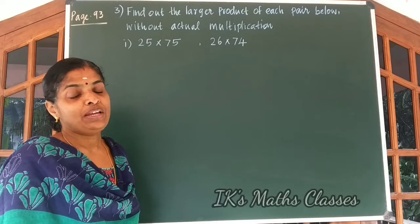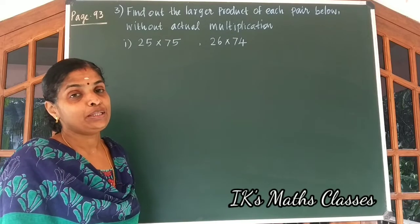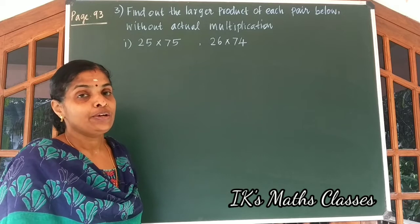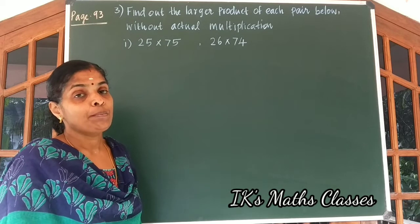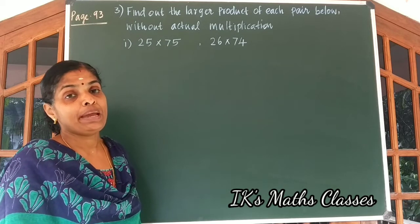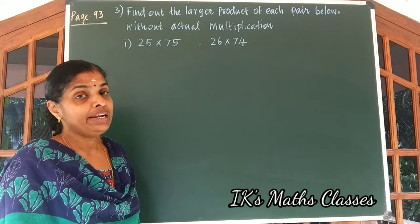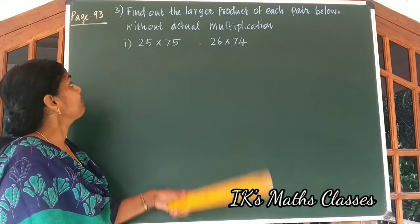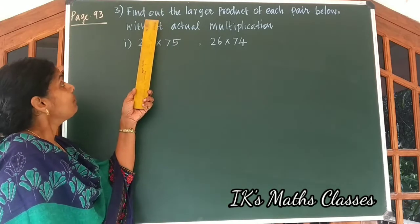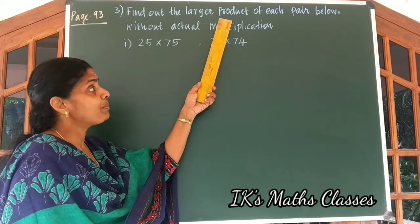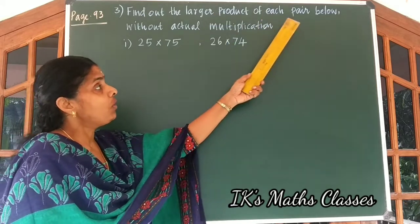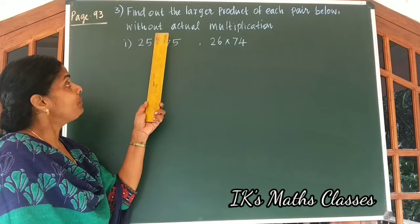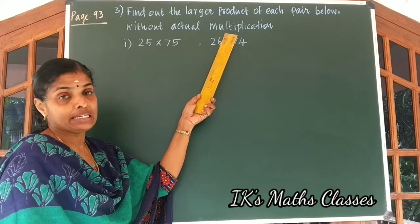Hi kids, welcome to the 10th part of identities. Today we are discussing problems in page number 93. Look at the third question: find out the larger product of each pair below without actual multiplication.